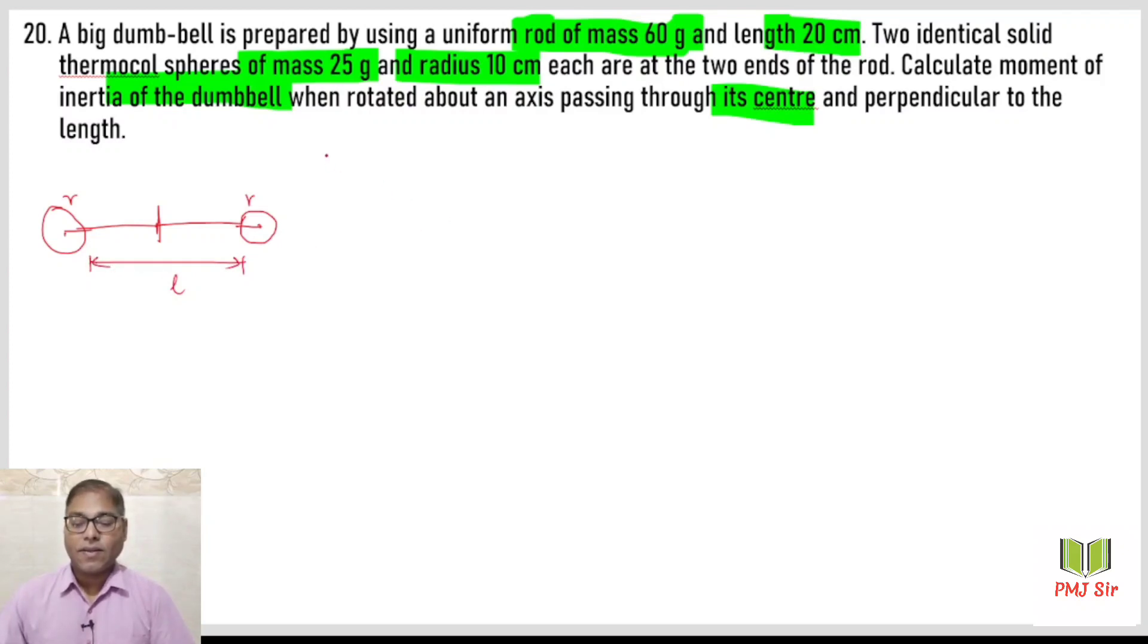Let us imagine a rod here with its center point where it rotates. At both ends there is a sphere attached. Let us say these are equal masses. The sphere has small radius r and the total length is L, the length of the rod. Given data: L is 20 centimeter, mass of the sphere is 25 grams, and mass of the rod M_r is 60 grams. It rotates about this axis. First we calculate moment of inertia for the rod. Moment of inertia for the rod when rotating from center is ML square divided by 12.